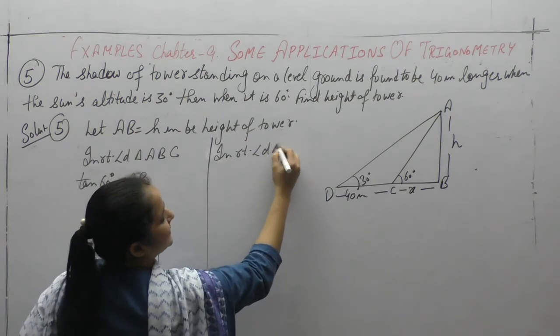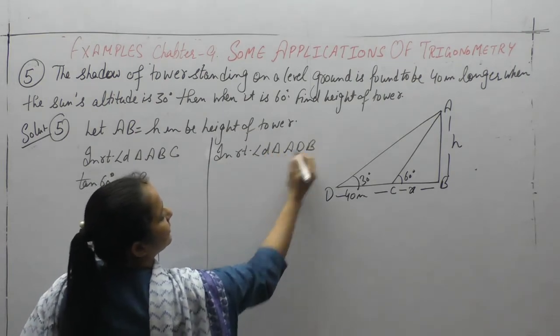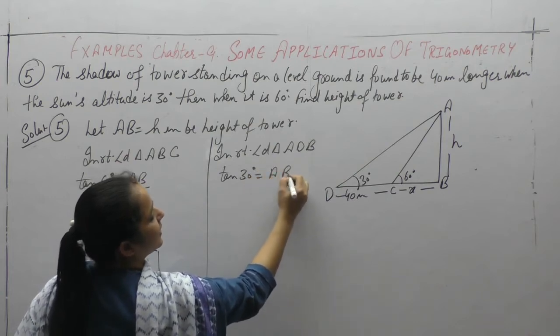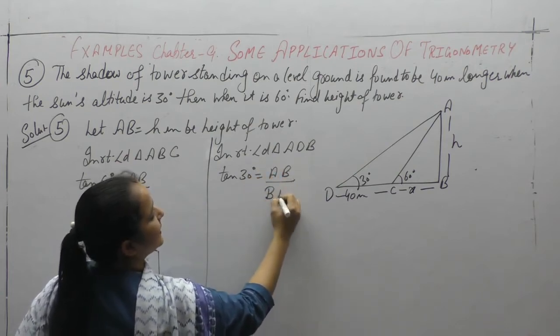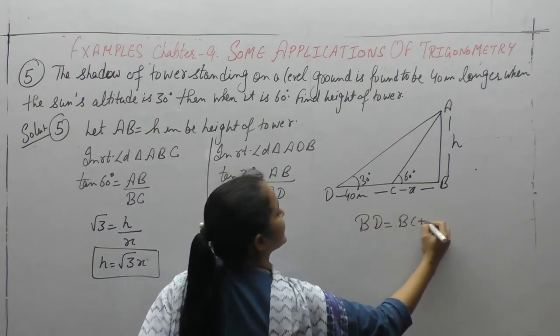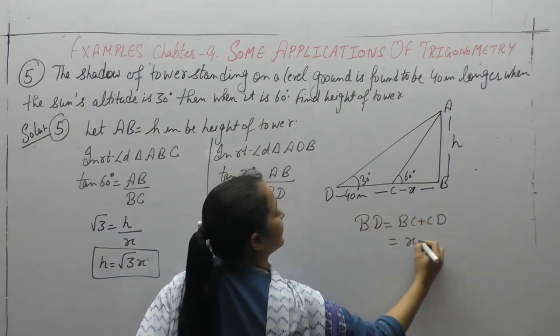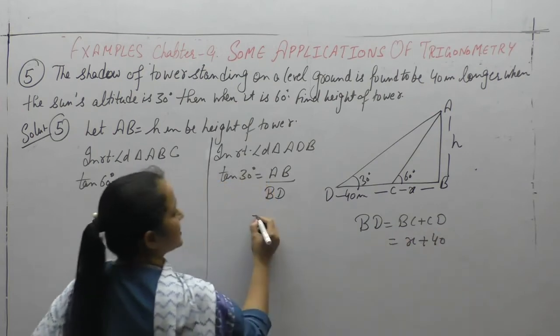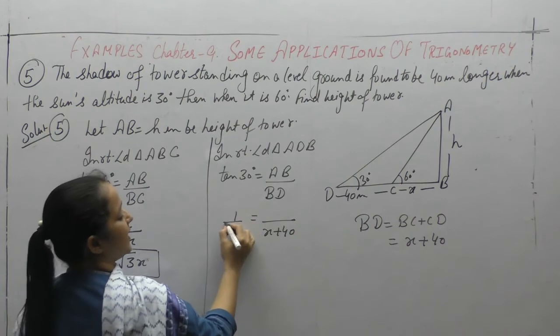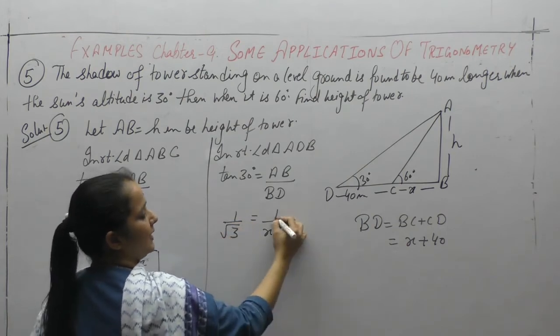Now in right angle triangle ADB, tan 30, perpendicular upon base is BD. BD किसके equal है? BC plus CD. BC को हमने x माना है और CD है 40. tan 30 is 1 upon square root of 3. AB is h.